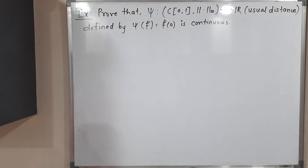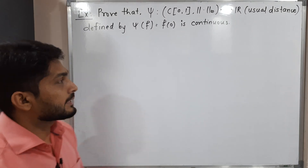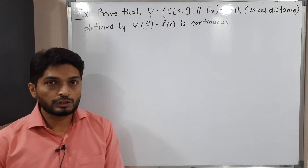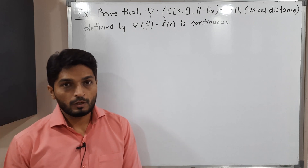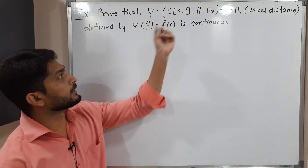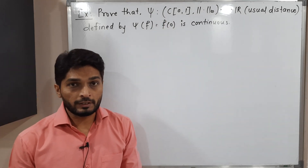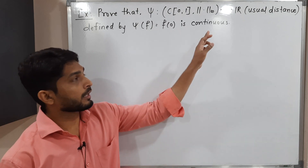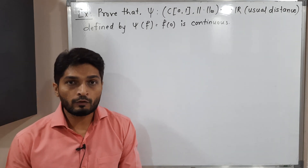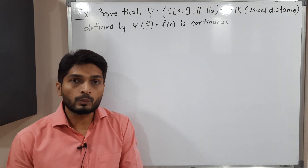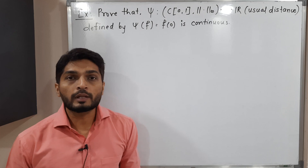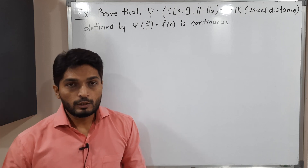Hi everyone. In this video, we are going to discuss this example. We have a function ψ defined on C[0,1] with norm infinity to ℝ, defined as ψ(f) = f(0). We have to prove that ψ is a continuous function.